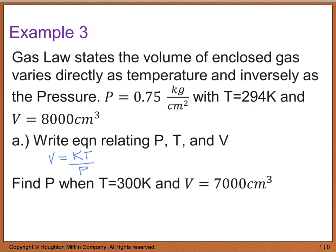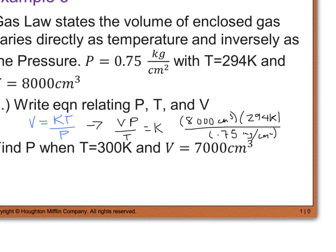Now we have to go ahead and plug in the values that they've given us, so that we can go ahead and solve for k. So when we do that, let's go ahead and rearrange our equation to get k by itself. So when we do that, we get V times P divided by T equals k. So now if I plug in my value for V, I have 8,000 cubic centimeters times my pressure of 0.75 kilogram per centimeters squared divided by my temperature, which is 294 kelvin. And when we simplify this, we end up with a k value equaling 1,000 divided by 49. This is just a fractional version in simplest form.